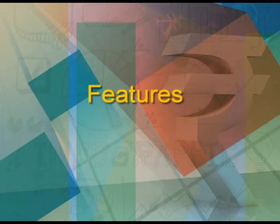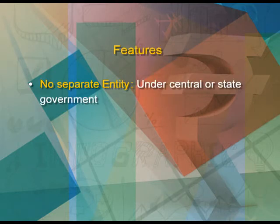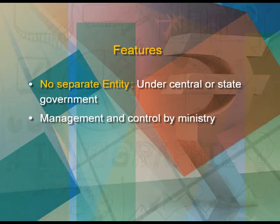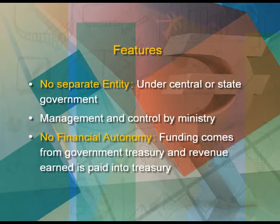The features of departmental undertakings are: they do not have any separate entity as they are under central or state government control. Their management and control is by the ministry, and they must obey all ministry decisions. They have no financial autonomy — funding comes from the government treasury and revenue is paid back into it. All financing and decision-making comes from the government.